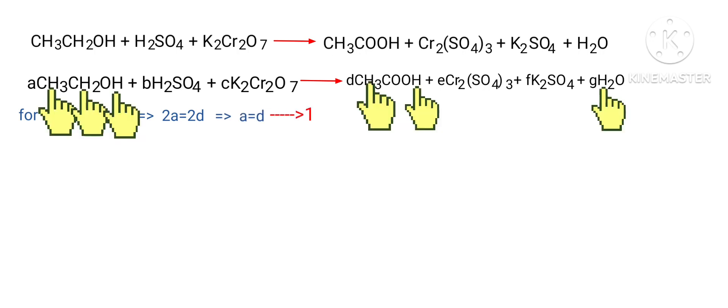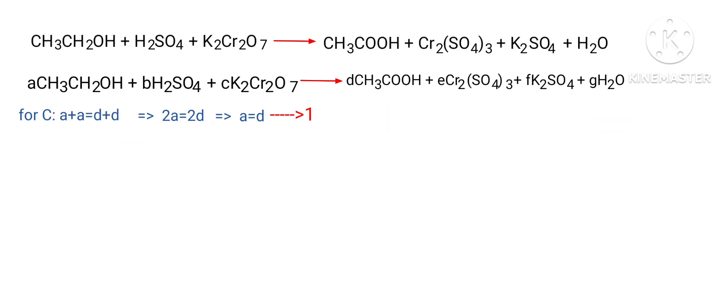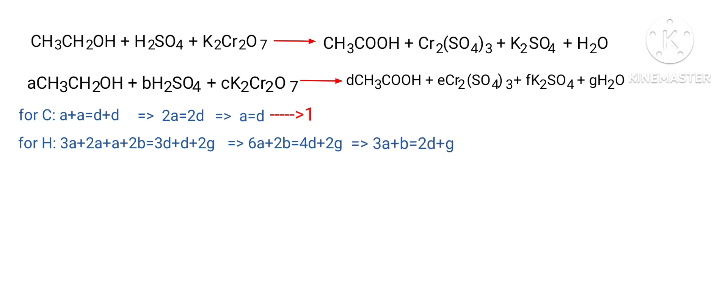For Hydrogen: 3A plus 2A plus A plus 2B equals 3D plus D plus 2G, which simplifies to 6A plus 2B equals 4D plus 2G. Dividing by 2 gives: 3A plus B equals 2D plus G. (Equation 2)